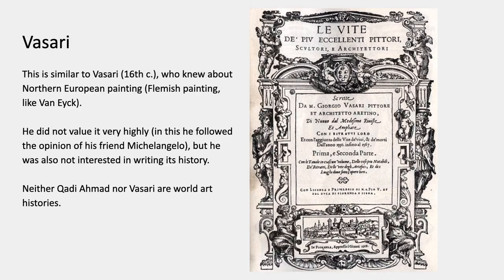That's not too different from Vasari, because he knew about Northern European painting. He knew about Flemish painting like Van Eyck — he didn't like it very much — and he and his friend Michelangelo talked about it sometimes. There's a dialogue in which Michelangelo belittles Northern European painting. But Vasari also wasn't interested in writing its history. It wasn't something that occurred to him to do. The most fundamental thing to think about when you're taking world art history is that it's historically strange to be in a culture where it seems like a good idea to write the history of the whole world.